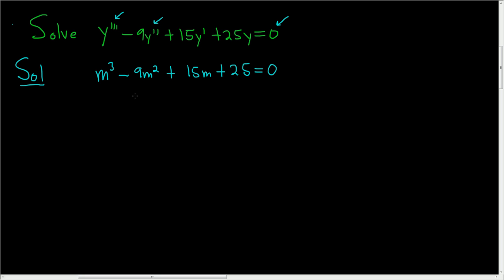Whenever you have four terms, you should always try to factor by grouping. In this case, it doesn't appear that that will work. So what we'll use is the rational roots theorem.